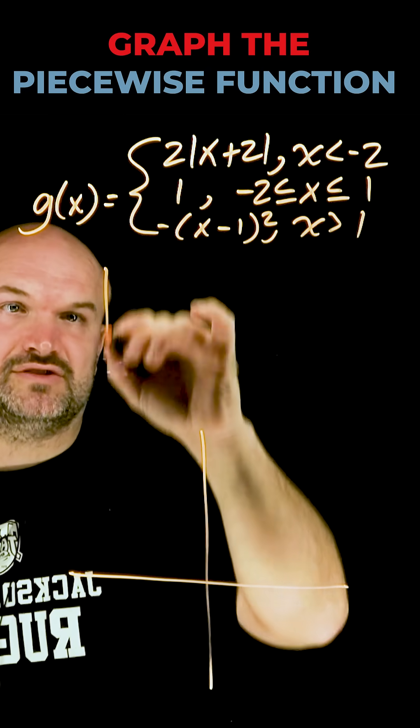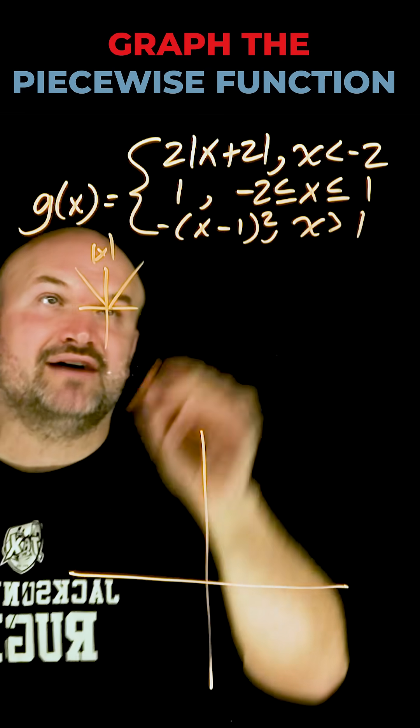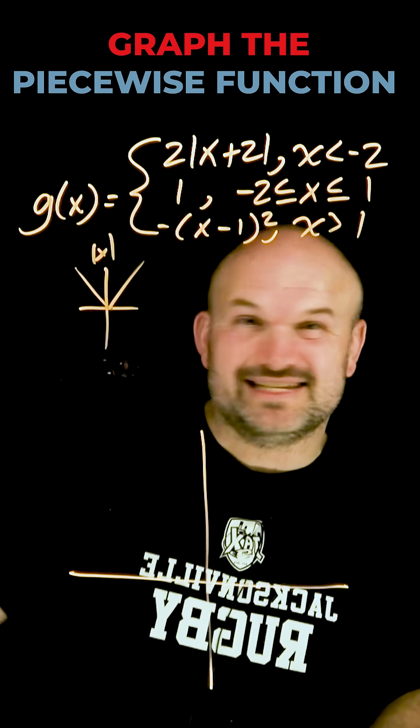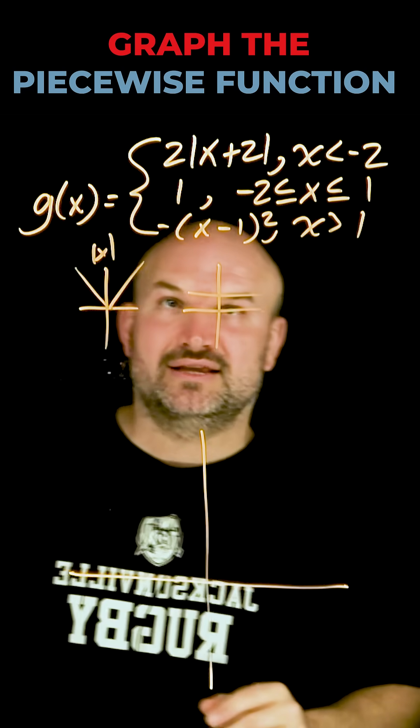And you can see we have an absolute value graph. So let's remember the parent graph there. So absolute value of x, that's going to be that v-shaped graph. We have a linear equation that's y is equal to 1. And if you remember, y equals 1, it's just going to be a nice horizontal line.